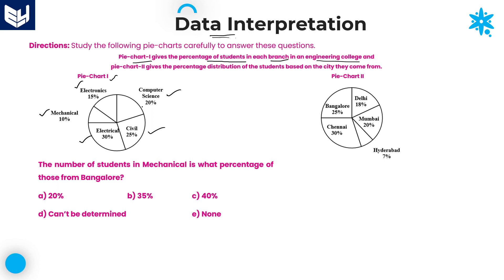In these five branches, the percentage of students — whatever the total value — here the total value is not given. Suppose, for example, total is equal to 1000. Among these 1000 students, the percentage-wise distribution of each branch is given: computer science 20%, civil 25%, electrical 30%, mechanical 10%, and electronics 15%. But in this case, the total number of students are not given.